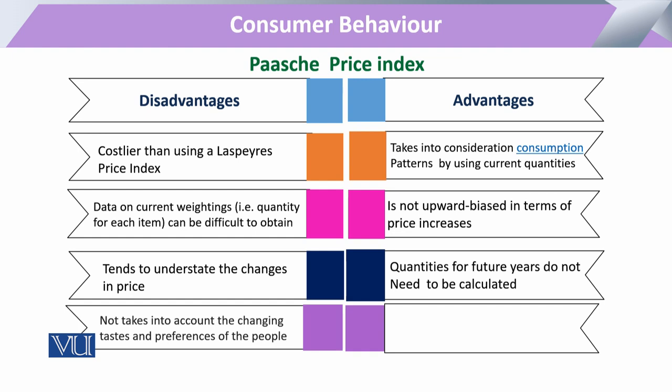This index does not appear in a perfect form — it has some advantages and some disadvantages. One disadvantage is that because we are measuring in the current period, collecting data on all commodities — their quantities and prices — is somewhat costly, and assigning weights increases the workload. Another issue is that it understates the changes that have occurred due to price changes. Also, over time from the base period, consumer preferences might change due to age, weather, or other factors, but this index does not include those changes in preferences. However, one benefit is that it is not upwardly biased.